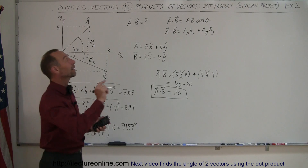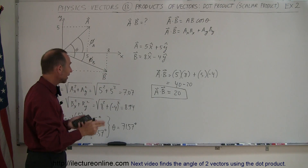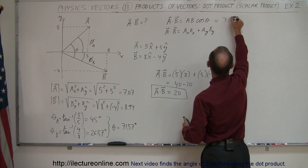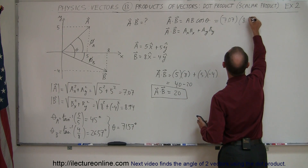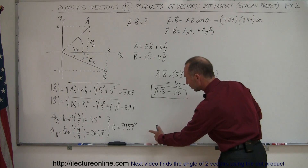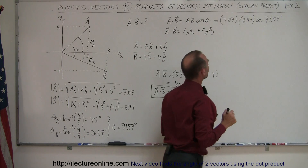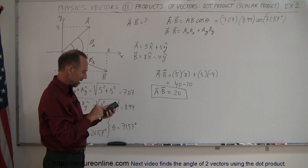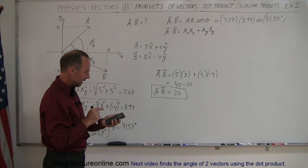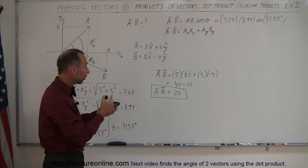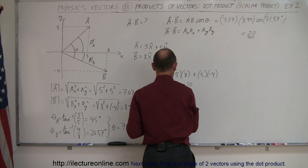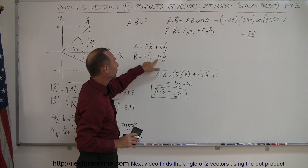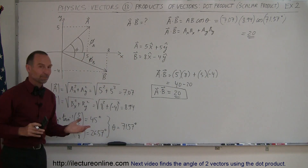Now we're ready to use the first method to find the dot product: magnitude of A times magnitude of B times cosine of the angle between them. That's 7.07 times 8.94 times cosine of 71.57 degrees, which gives 19.98 — close enough to 20. Both methods give the same result. Notice that when using the component method, if a component is negative, that negative number goes in to get the correct answer. And that's how you find the dot product.